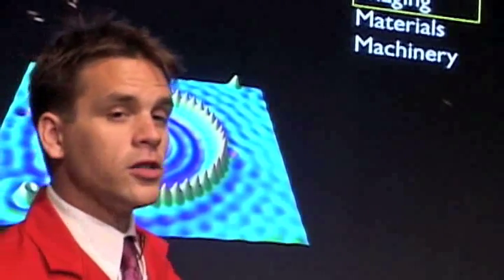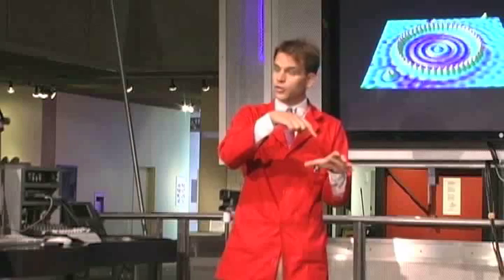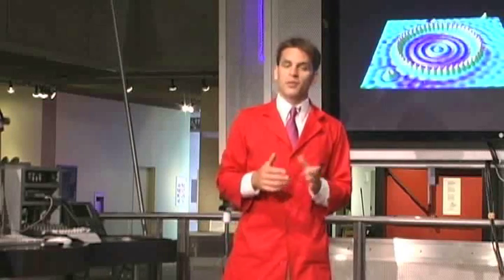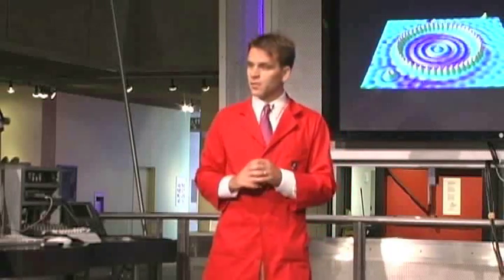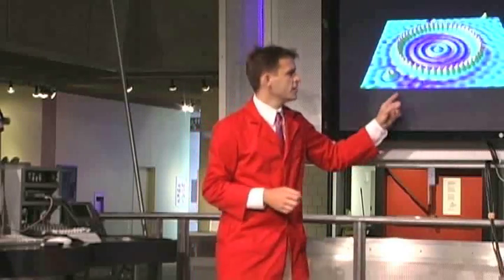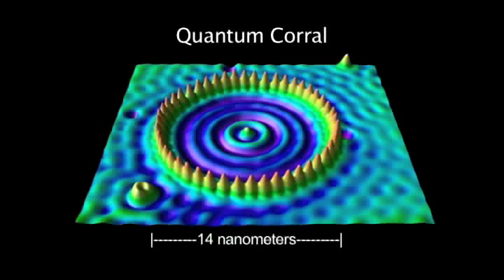In fact, they've also allowed us to manipulate things on that scale. Because you're using a physical tip, those microscopes are able not only to take pictures of things on a small scale, but to move them around. This here is a picture of a thing called a quantum corral, first built by a man by the name of Don Eigler at IBM.